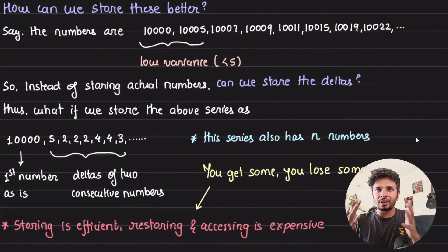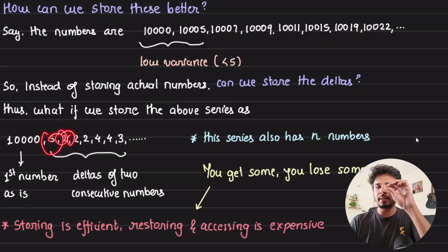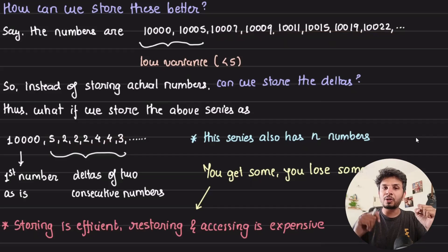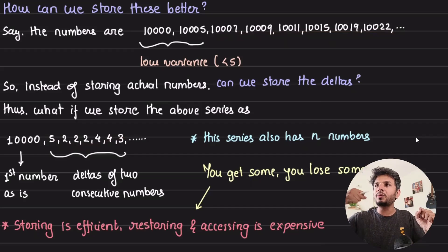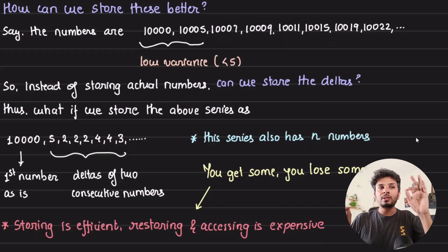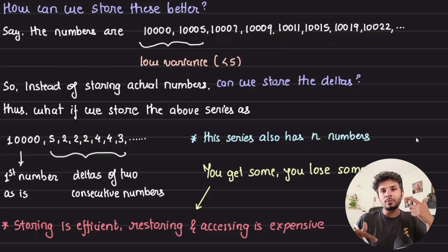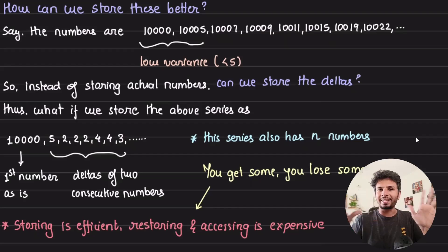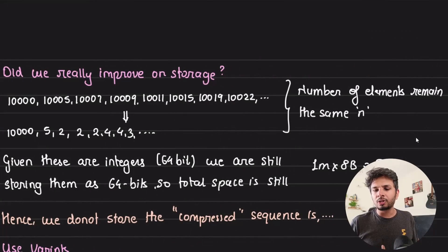There's a classic trade-off here. You gain the ability to represent the exact same series with smaller numbers — that's the storage benefit. But what you lose is that when you retrieve the data, you have to reconstruct the original numbers by going through the deltas. You get storage efficiency but must leverage CPU to recompute the original numbers.